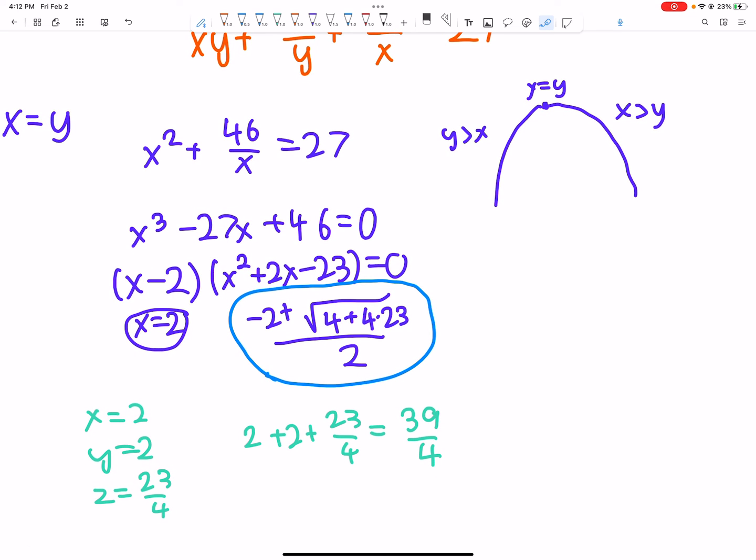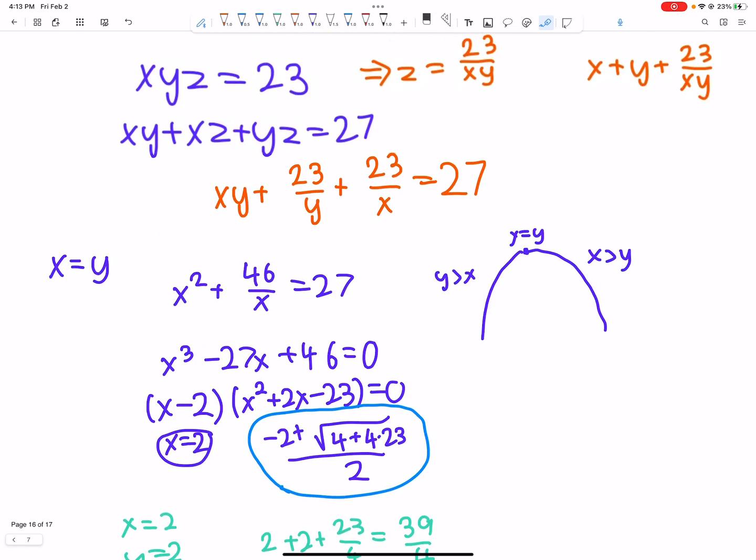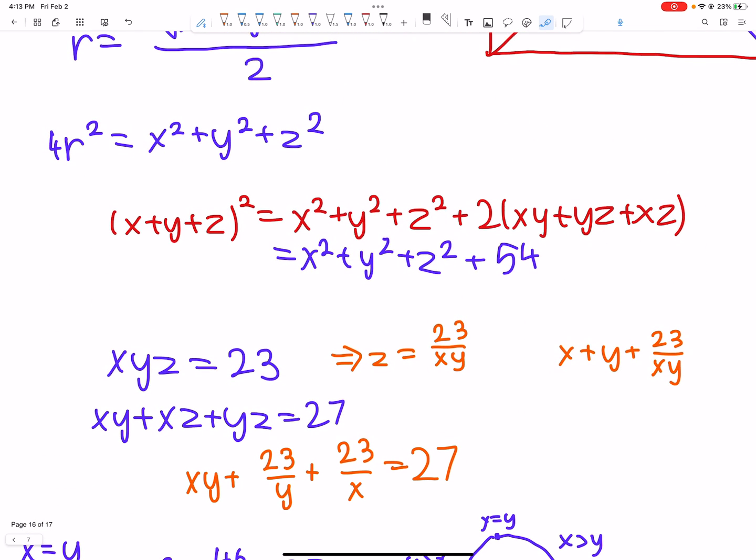So, 2 plus 2 plus 23 over 4, 39 over 4. That's sum, and now we just plug it in here, right? This becomes 39 over 4 squared, so 39 over 4 squared. And if you know the squares trick from a video I made a long time ago, it's just easy to find, 1521 over 16. And now we subtract, and now we subtract 54, so we have 1521 minus, over 16, minus 54.